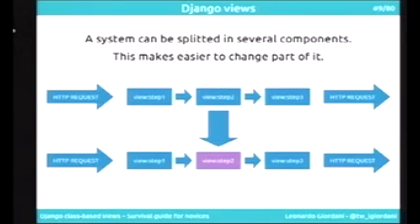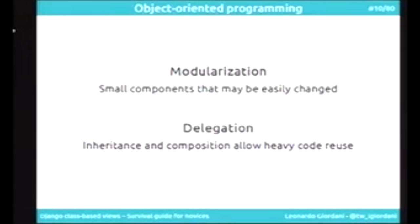In this very simple diagram, you can split the view in several steps. Then you enhance just the step you want to enhance and leave the others shared with the original view or function. Object-oriented comes into play because object-oriented was invented exactly for this purpose — to build systems made from small components. This is modularization. It allows code reuse through delegation, inheritance, or composition.